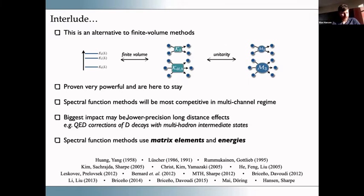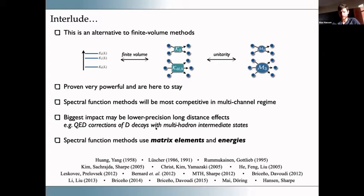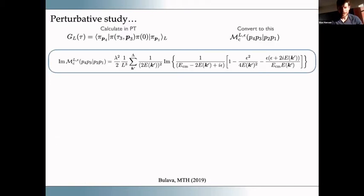These spectral function ideas will likely be most competitive where finite-volume energy methods break down — at higher energies with many scattering channels. Speculating about the biggest impact: perhaps low-precision long-distance effects such as QED corrections where high precision isn't needed, heavy flavor sectors where there's no other method, and meson-antimeson mixing in the heavy sector. One quick way to see this is genuinely different from the other methods: finite-volume energy methods use only energies, whereas spectral methods use both matrix elements and energies.